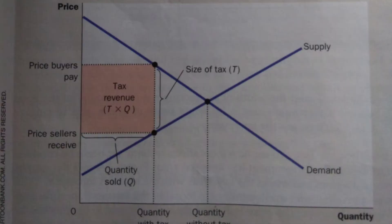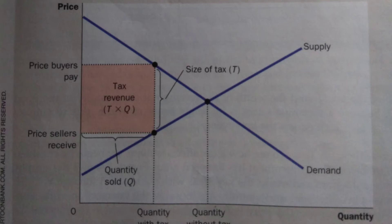Take a look at this figure. The government's tax revenue is represented by the colored rectangle between the supply and demand curves. The height of this rectangle is the size of the tax, T, and the width of the rectangle is the quantity of the goods sold, Q. Because a rectangle's area is its height times its width, this rectangle's area is T times Q, which equals the tax revenue.